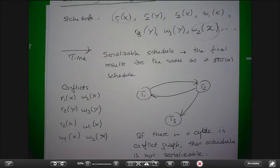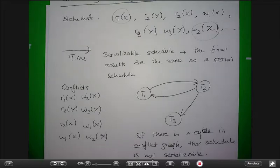This is the basic idea. This is a bad schedule because transaction 1 and transaction 2 do things that change each other's data. There is no serial schedule that will give you the same result.